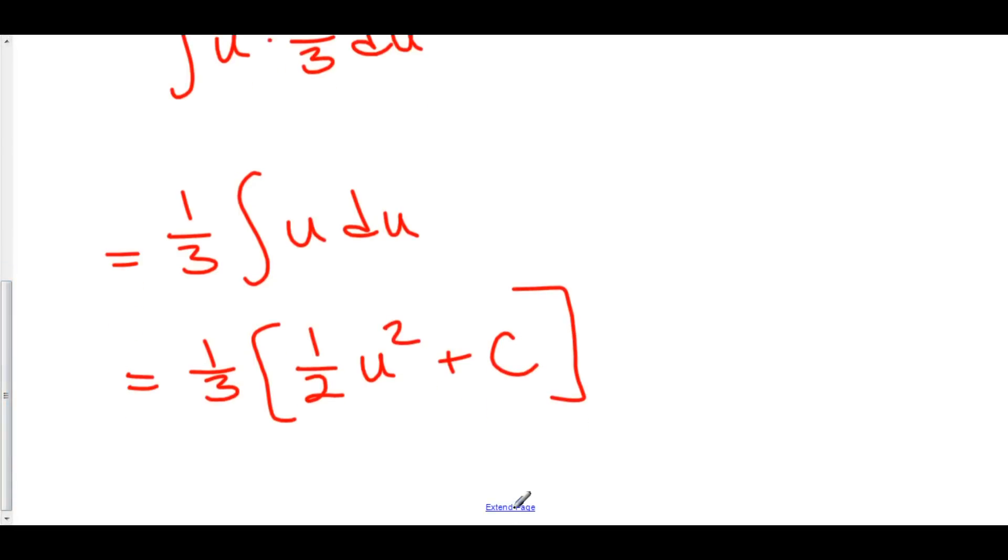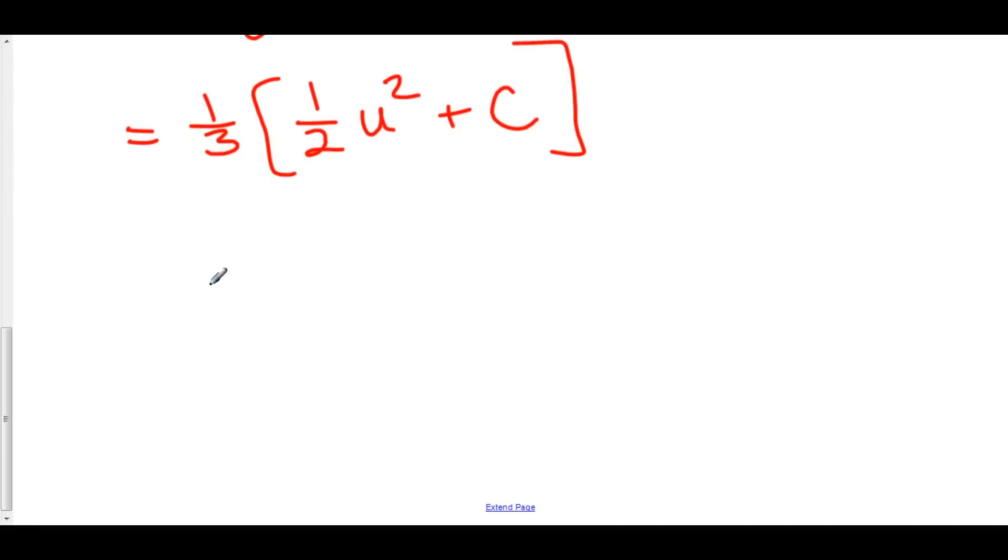And, of course, we can distribute the 1 third to both the 1 half u squared as well as the c. But, of course, my c is not changed because that's just some constant. 1 third times 1 half u squared is 1 over 6 u squared. And, 1 third times c is still some constant c.